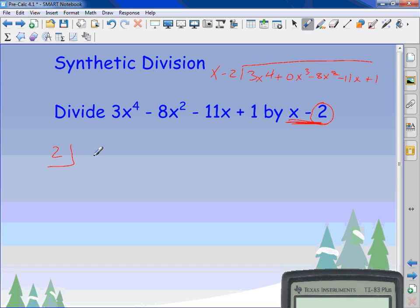Now the next thing I'm going to write are just coefficients: 3, negative 8, negative 11, and 1. For synthetic division, you have to put filler in. I'm going to draw a line. First thing I do, bring down the first number. 3.